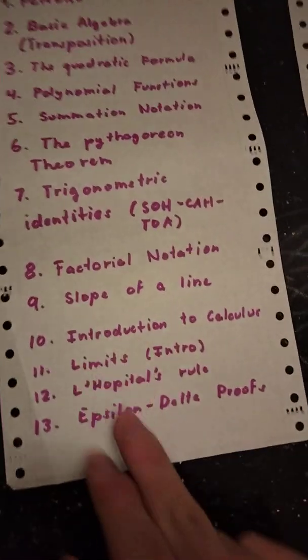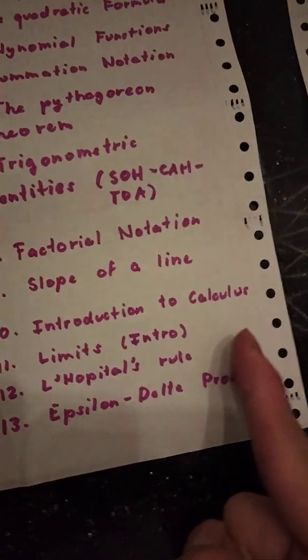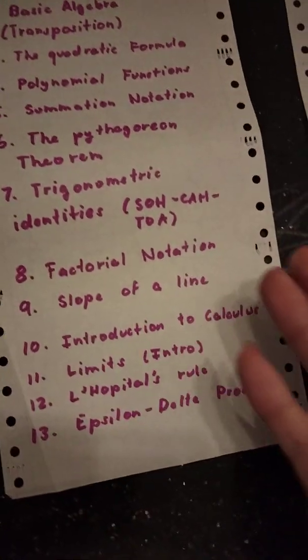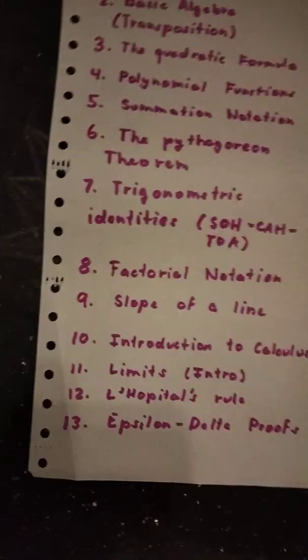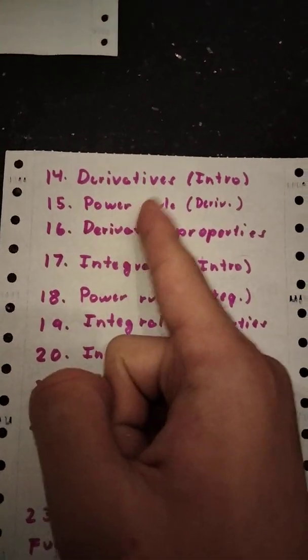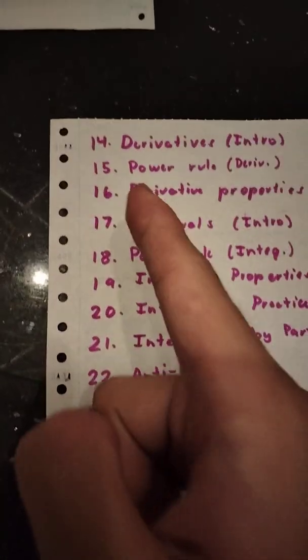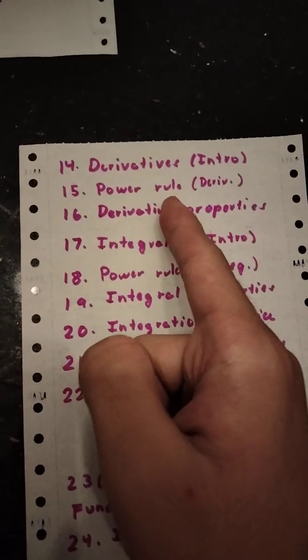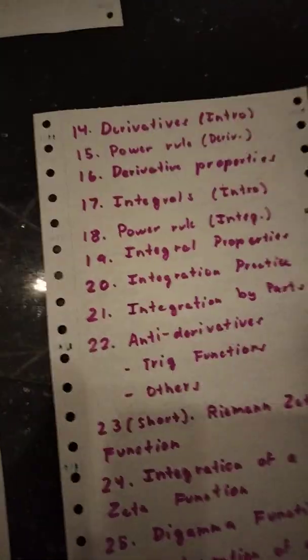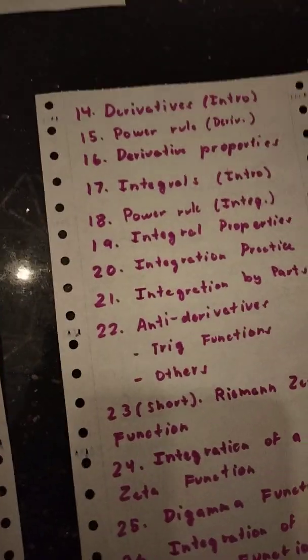For season two it's going to be from episodes 10 to 21 starting with the introduction to calculus, and then limits which is an intro and l'Hôpital's rule on how to find limits from derivatives. Then we have epsilon delta proofs. Episode 14 deals with derivatives which is the intro and the definition of a derivative. And then episode 15 deals with the power rule for derivatives.